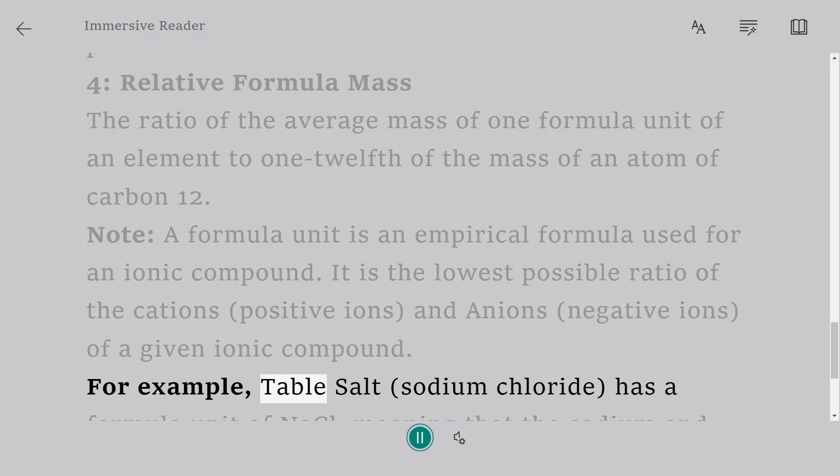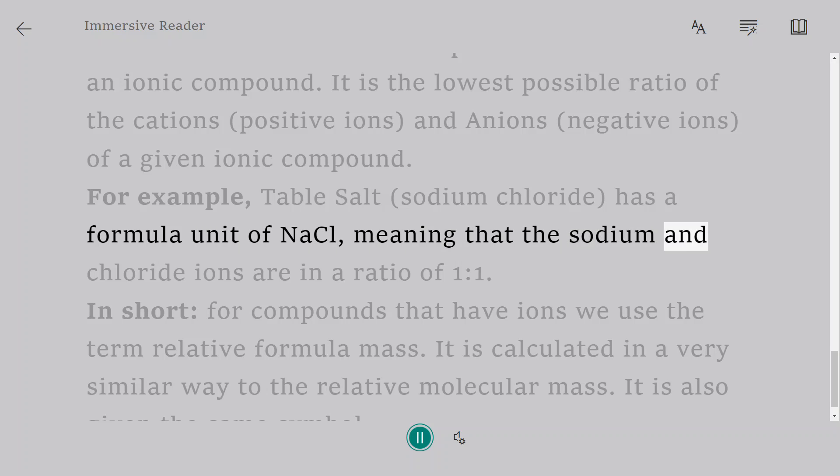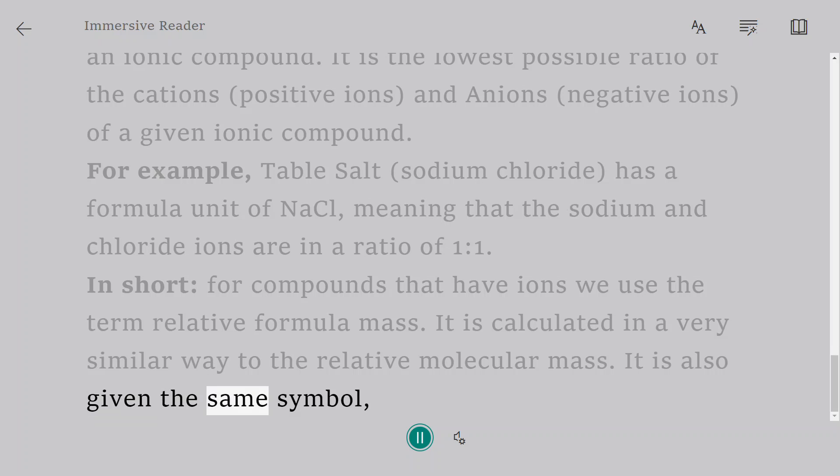For example, table salt (sodium chloride) has a formula unit of NaCl, meaning that the sodium and chloride ions are in a ratio of 1 to 1. In short, for compounds that have ions we use the term relative formula mass. It is calculated in a very similar way to the relative molecular mass. It is also given the same symbol.